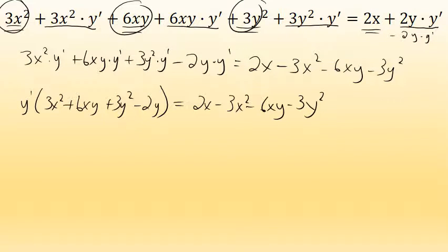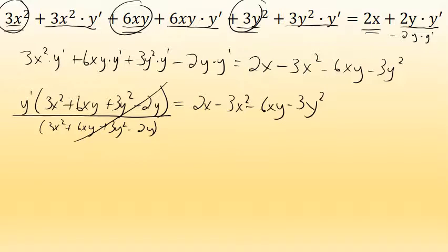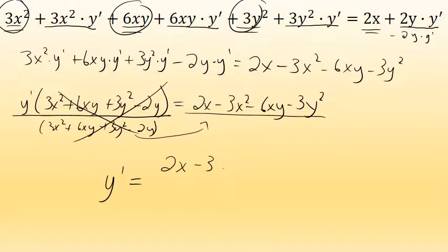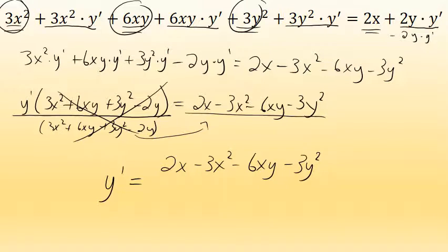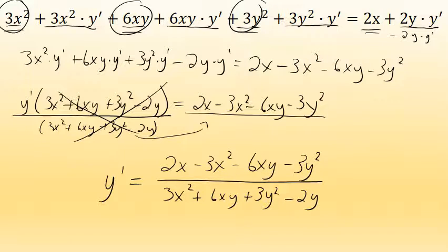The final step to isolate y prime is to divide both sides by the quantity 3x squared plus 6xy plus 3y squared minus 2y. Doing so cancels that quantity on the left, leaving y prime equals 2x minus 3x squared minus 6xy minus 3y squared, all over 3x squared plus 6xy plus 3y squared minus 2y.